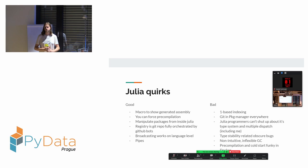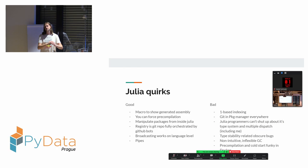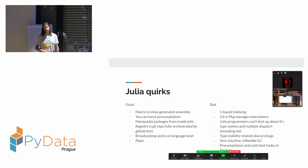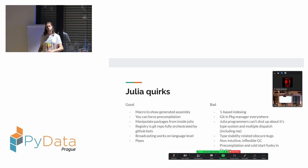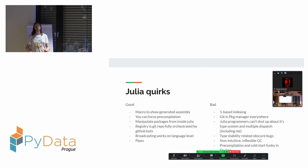Julia has some quirks - some good, some bad. The good quirks include a macro to show the generated assembly from your functions - it's a high-level language and you can see the assembly being executed, and sometimes the assembly fits on one page. You can force pre-compilation of some packages because Julia has a JIT runtime based on LLVM, and you can enforce some compilation to happen ahead of time. If you don't do this, the first run when compilation happens is quite slow.